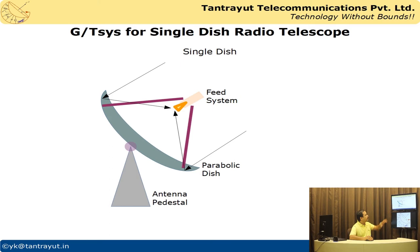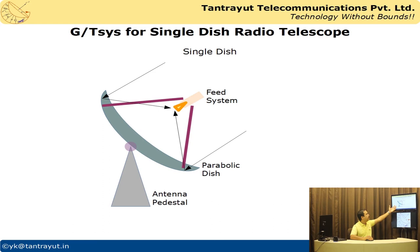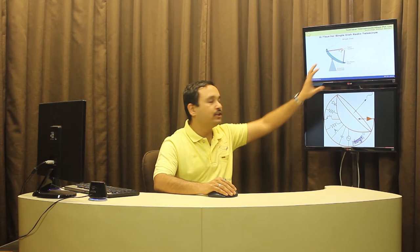To calculate G/Tsys for this complete system we look at two aspects. First is the gain of the dish, or effective area of the dish, which depends on the feed taper, the f/D ratio of your reflector, the surface accuracy, and so on. Second, the Tsys — the system temperature — depends on the noise picked up by the antenna from the sky and ground, the noise generated inside the system, the noise from the low noise amplifier, and so on. Let's start with the aperture efficiency using a practical case to get a feel for the numbers.